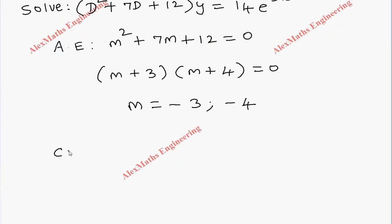As per the procedure, the complementary function is CF = c₁e^(-3x) + c₂e^(-4x).